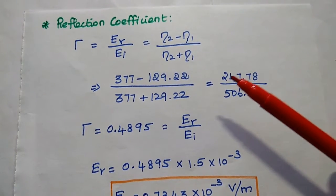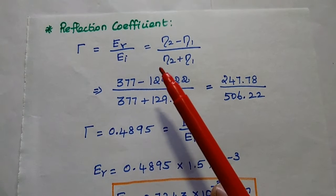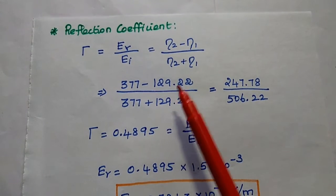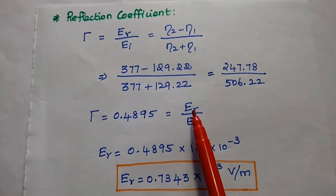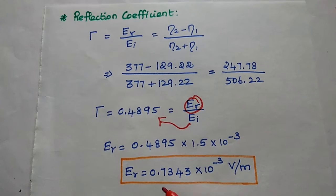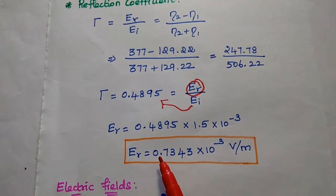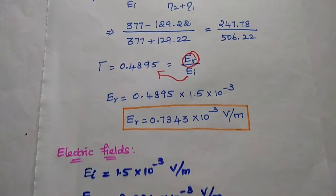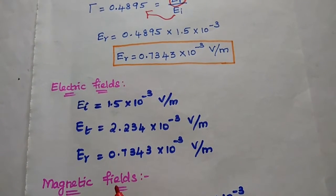Next we find the reflection coefficient. Gamma is the ratio of reflected electric field to incident electric field, equal to eta 2 minus eta 1 divided by eta 2 plus eta 1. Substituting values gives gamma equal to 0.4895. With EI equal to 1.5 × 10⁻³, the reflected electric field ER equals 0.7343 × 10⁻³ volt per meter. We have now obtained the incident, transmitted, and reflected electric fields at the interface.